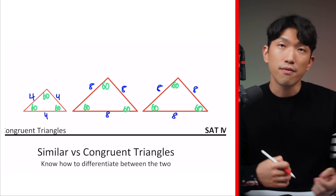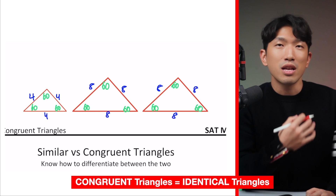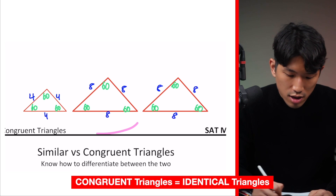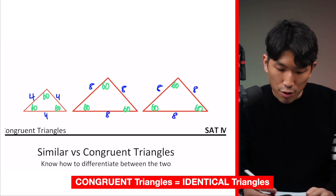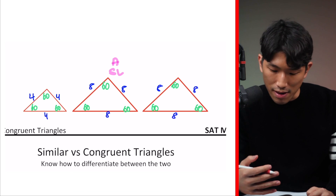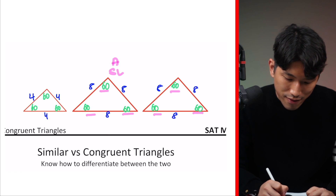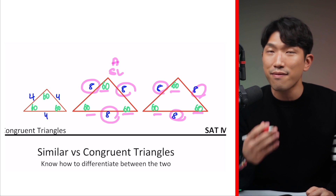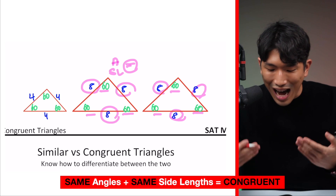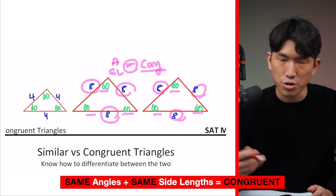What makes two triangles similar versus congruent? These two triangles are considered congruent because they are the same triangle. The word congruent is just another fancy word for same or identical. Two triangles are considered congruent when they have the same set of angles and the same set of side lengths. Looking at these two triangles, they have the same angles — all 60 degrees — and the same side lengths of 8, 8, 8. When these two conditions are met, they are literally identical triangles, which is why we call them congruent triangles.